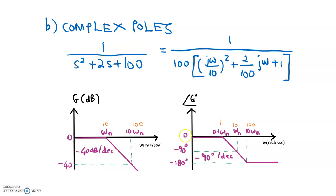For phase, the starting point is 0 degrees. The frequency range is one decade before the cutoff frequency and one decade after the cutoff frequency. Within this frequency range only, the slope has a non-zero slope: negative 90 degrees per decade. Negative because it is poles, and 90 degrees per decade instead of 45 because it has double poles. So the slope is negative 90 degrees per decade only within this range. For frequency less than 1, the slope is 0 degrees per decade. For frequency greater than 100, the slope is also 0 degrees per decade.